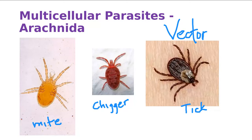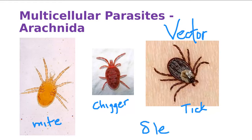Why are these Arachnida? They have eight legs. Count them: one, two, three, four, five, six, seven, eight. They're very related to spiders. You can count again: one, two, three, four, five, six, seven, eight.